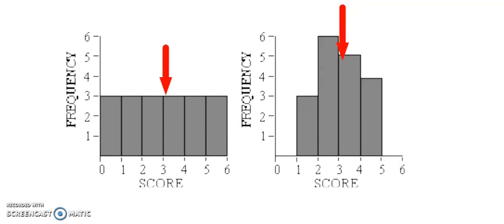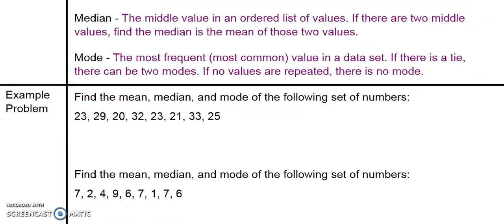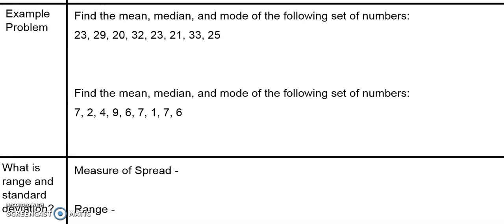It's hard to tell exactly where the center is — what the mean, median, and mode are — without actually having the raw data in front of us. So let's try doing an example or two where we have the actual data. Find the mean, median, and mode of the following set of numbers: 23, 29, 20, 32, 23, 21, 33, and 25. If you think you know how to do this, pause the video here and try this on your own.